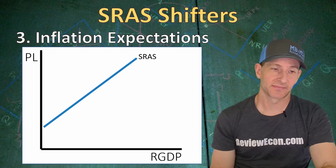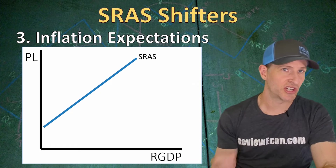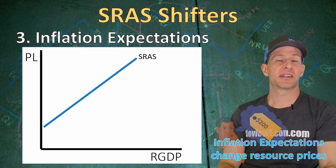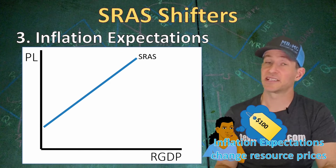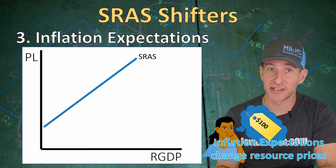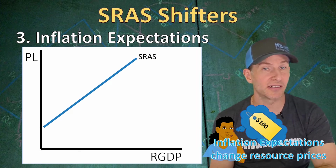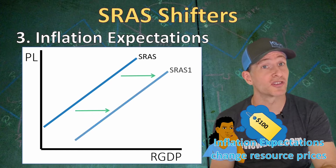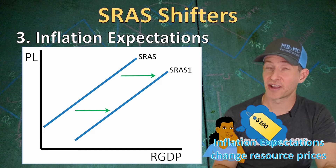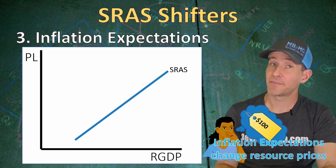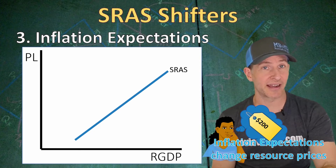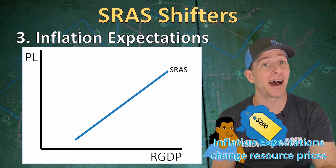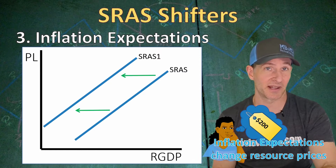Third, we have inflation expectations. When the expectation of inflation changes moving forward, that is going to change resource prices and wages. If there becomes an expectation of lower prices, businesses will expect lower profits and therefore lower wages. Since workers are expecting lower prices as well, they will accept those lower wages. That means lower production costs for businesses, shifting the short run aggregate supply curve to the right. If we have an increase in inflation expectations, workers will demand higher wages, businesses will give those higher wages, and those higher wages mean higher production costs, shifting that short run aggregate supply curve to the left.